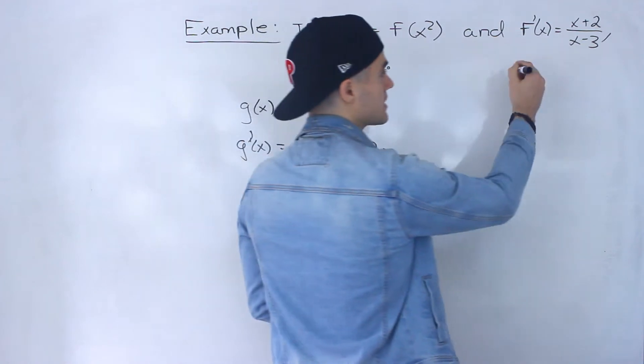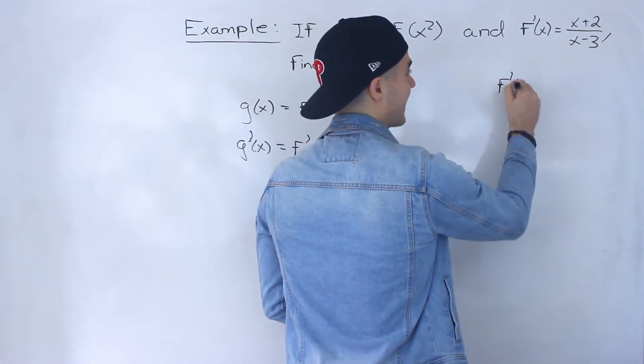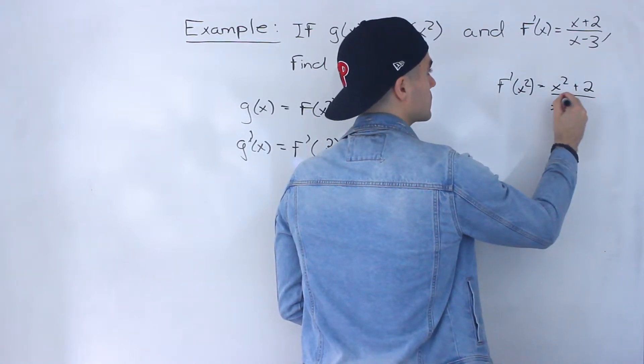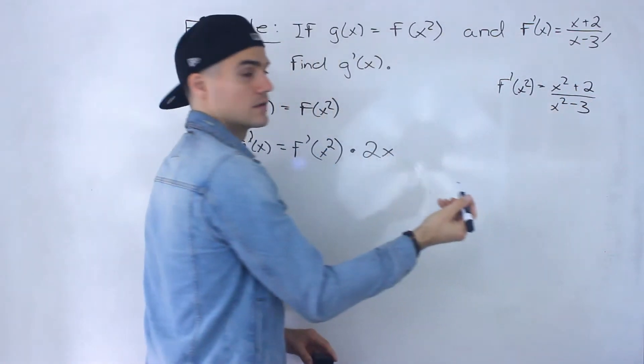So if f prime of x equals this, that means f prime of x squared is going to be x squared plus 2 over x squared minus 3, like that.